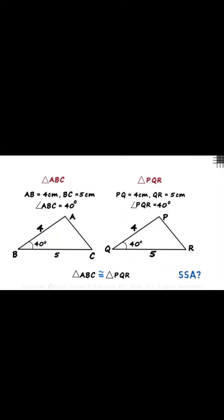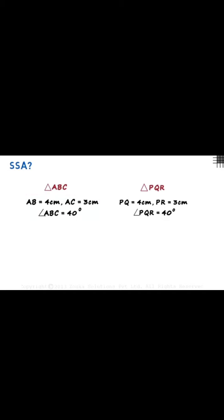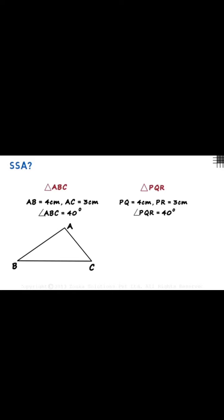Let's start. We can see here that two sides 4 and 5 have 40 degrees between them - that is SAS, which was congruency. But SSA - if there are two sides and the angle is somewhere on the side - what will happen? So first we have triangle ABC, in which AB is equal to 4 cm, AC is 3 cm, and angle ABC is 40 degrees.